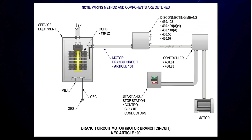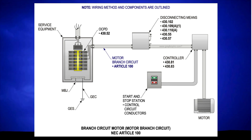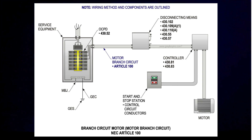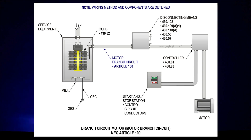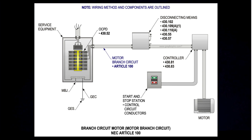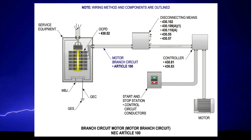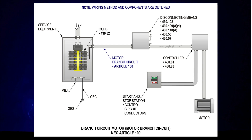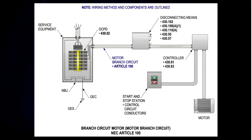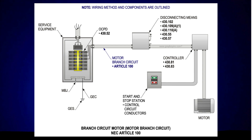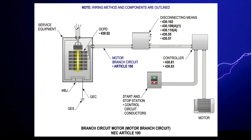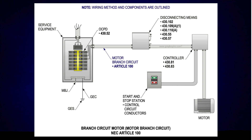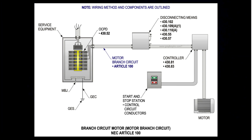A new definition has been added to Article 100 to differentiate between a branch circuit and a motor branch circuit. There are many definitions that have been added over the years to differentiate a branch circuit, such as appliance branch circuit, general purpose branch circuit, individual branch circuit, and multi-wire branch circuit.